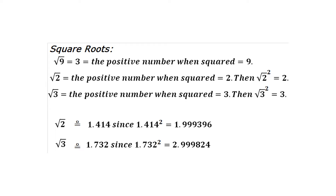The square root of 2 is approximately 1.414; squaring 1.414 gives 1.999396, close to 2. The square root of 3 is approximately 1.732; using just 1.7, we get 1.7² = 2.89. To three decimal places, 1.732² = 2.999824, which is very close to 3.